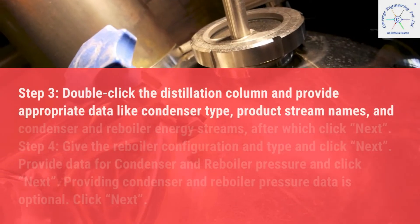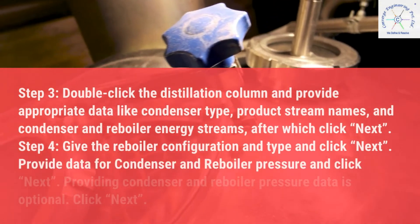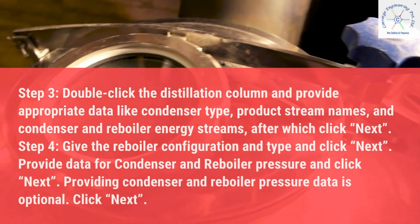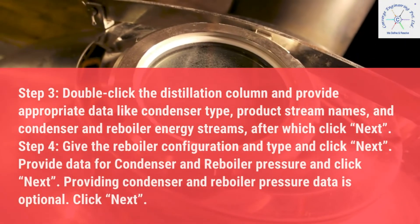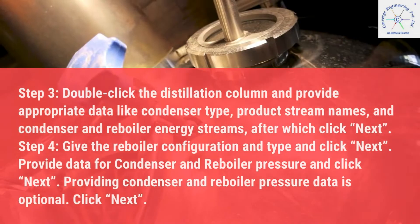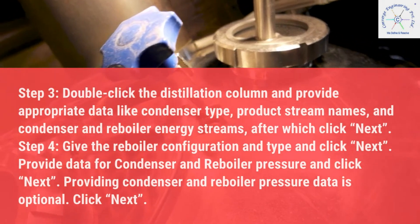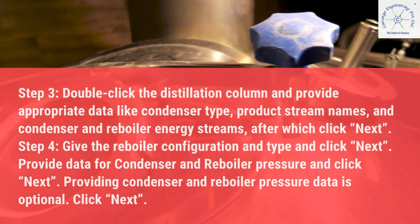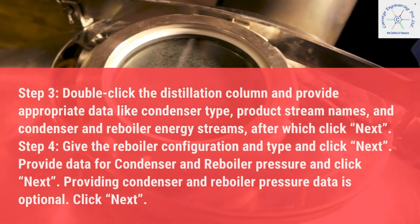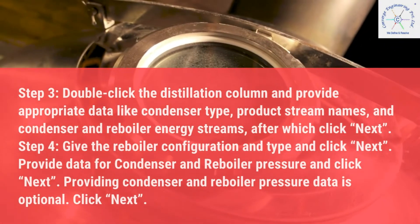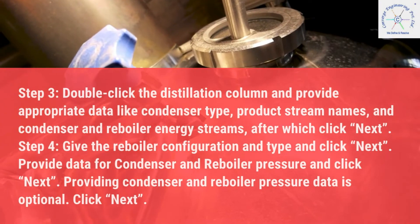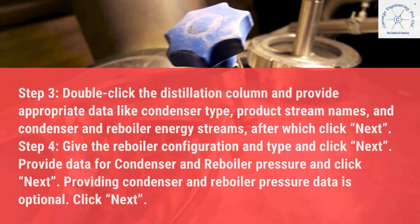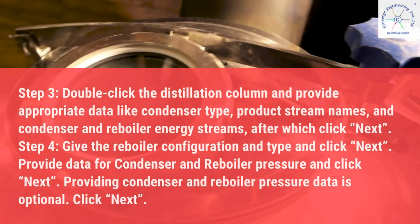Step 3: Double-click the distillation column and provide appropriate data like condenser type, product stream names, and condenser and reboiler energy streams, then click Next. Step 4: Give the reboiler configuration and type and click Next. Provide data for condenser and reboiler pressure and click Next. Note that providing condenser and reboiler pressure data is optional.